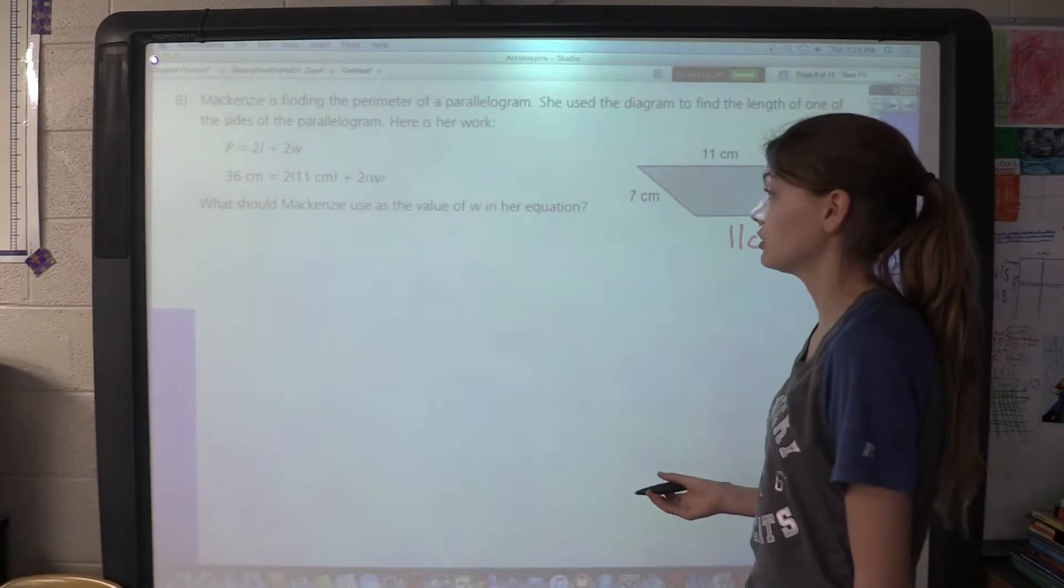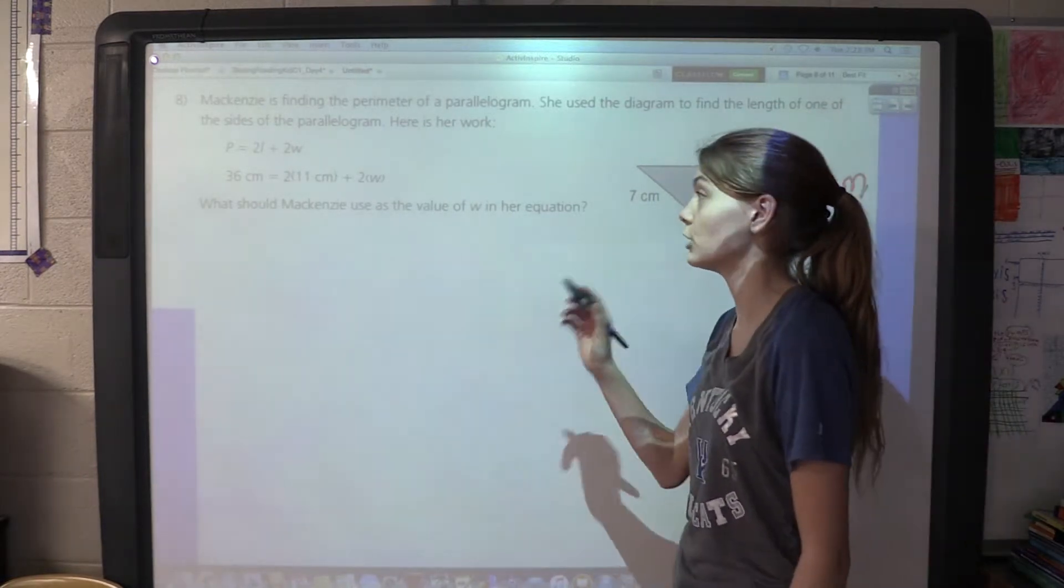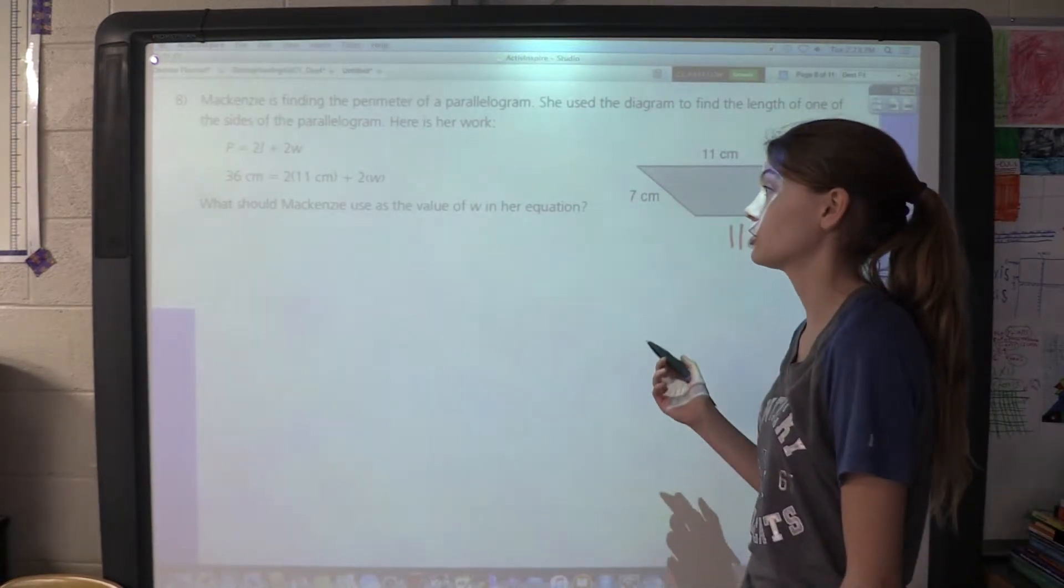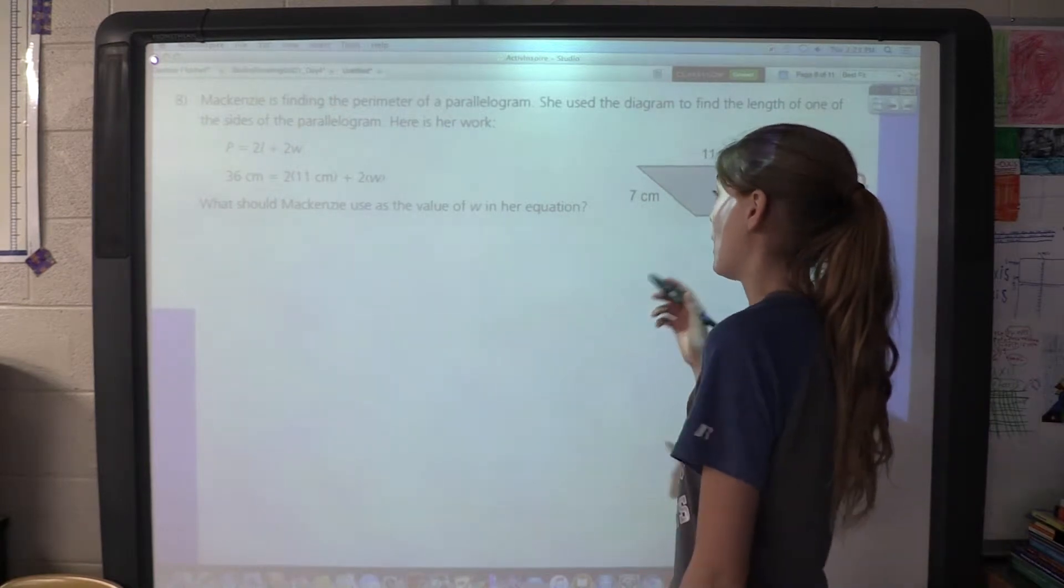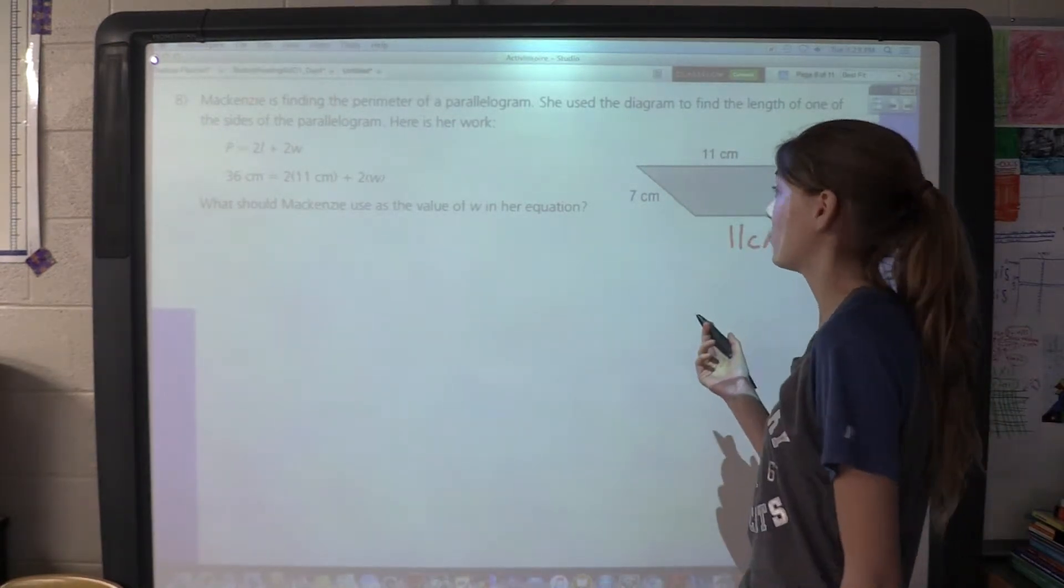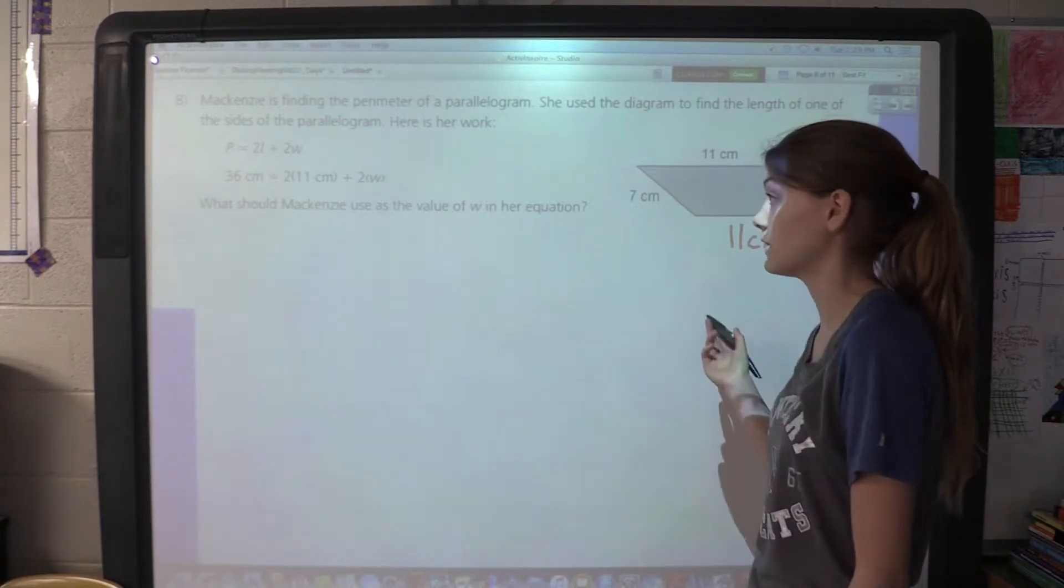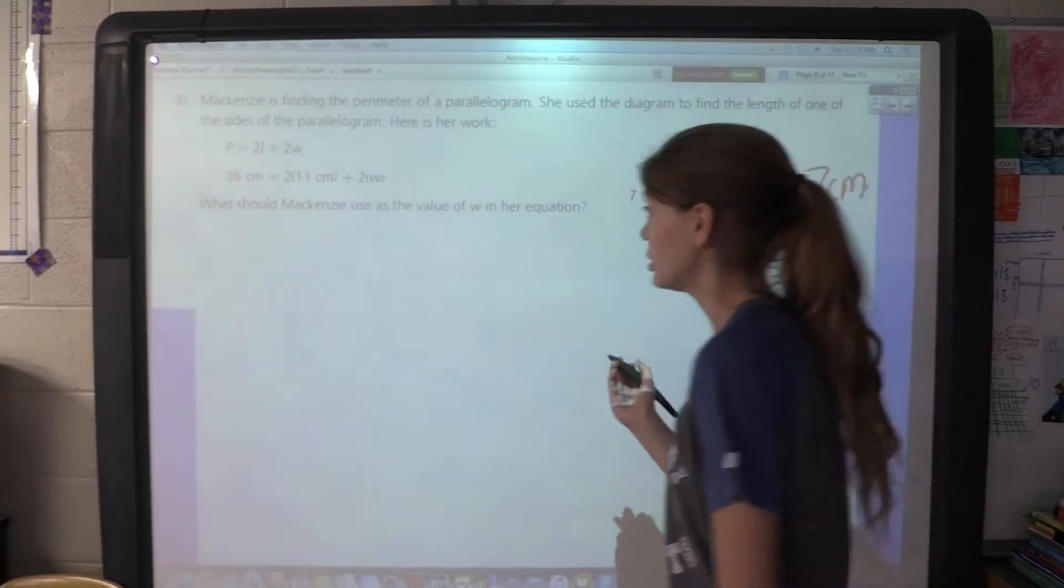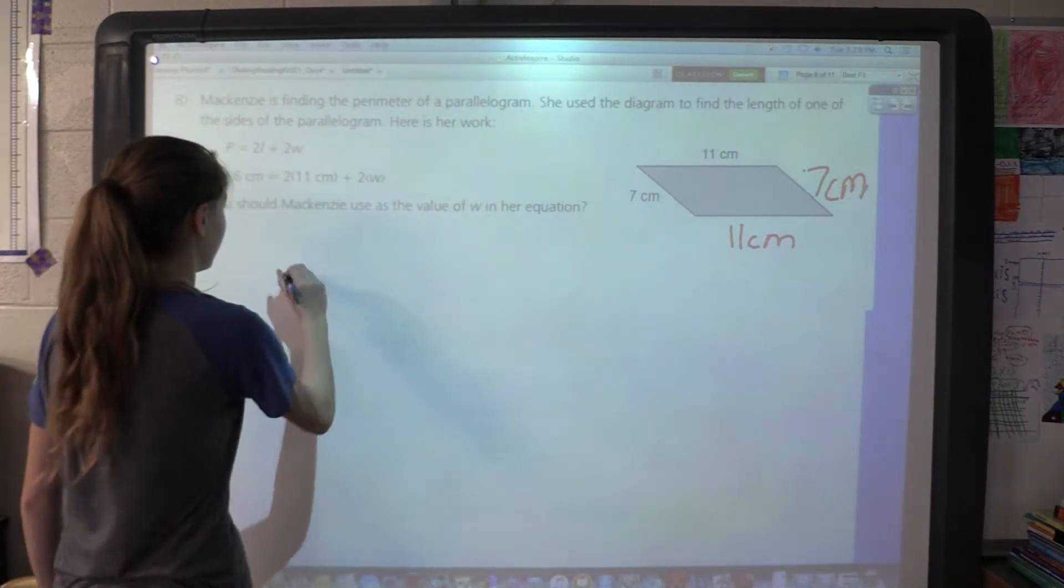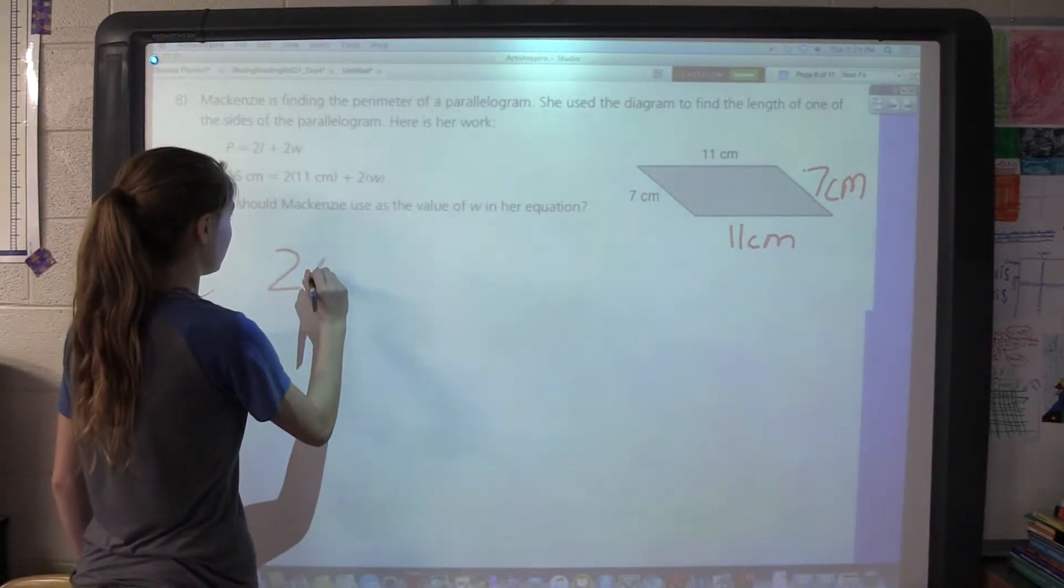So what she is doing is multiplying 2 by 11 centimeters and 2 by w. The width would be 7 centimeters because the length is 11 centimeters. So what she's going to be doing would be 2 times...